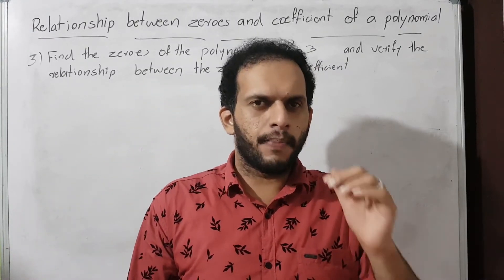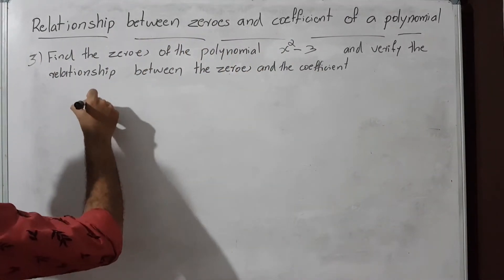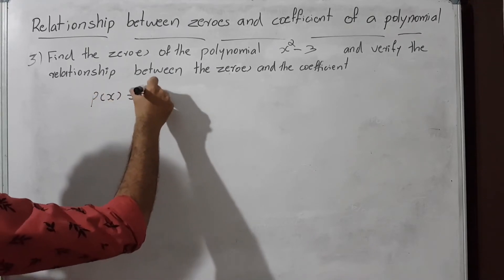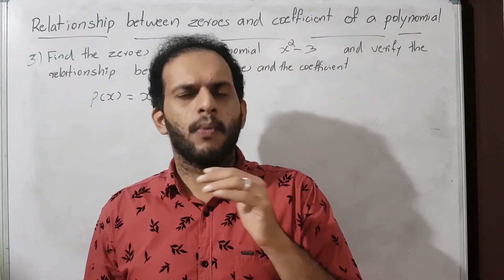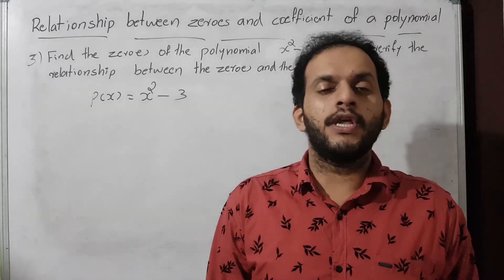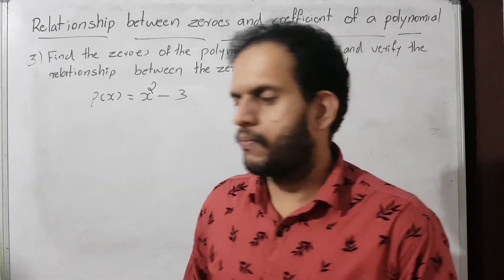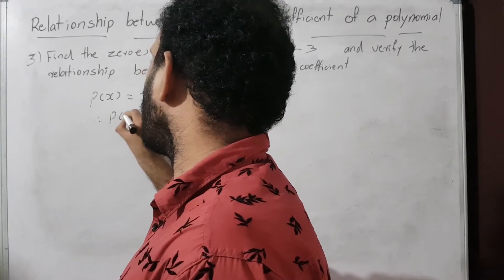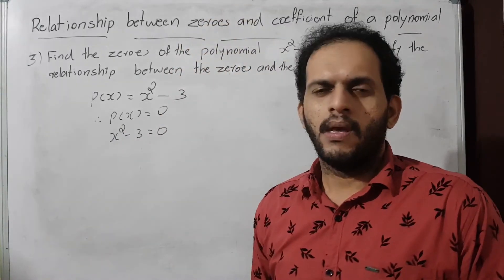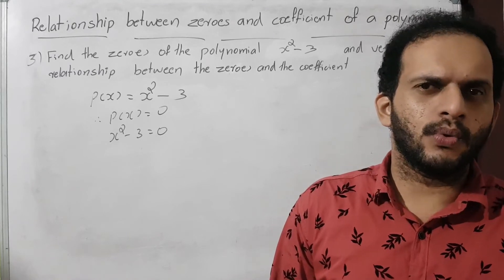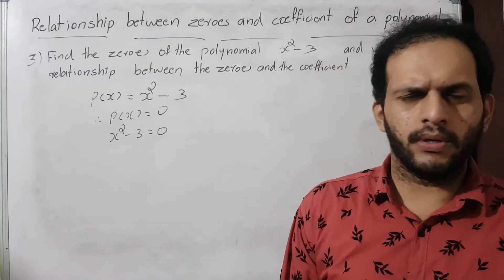The polynomial x² minus 3 is not in the standard form ax² plus bx plus c, because there is no middle term. For this type of question, we cannot use the splitting middle term method. Instead we apply the identity a² minus b² equals (a plus b)(a minus b).